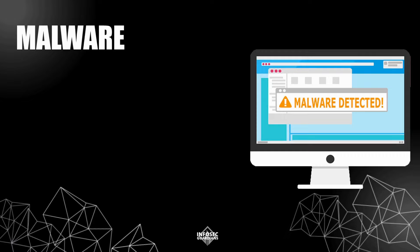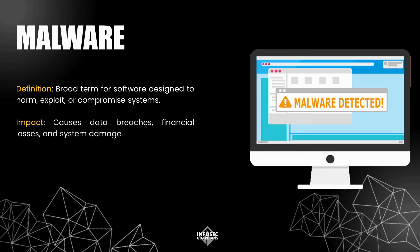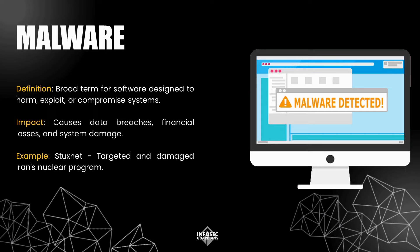At this point, you might be wondering how all these types of malware fit under the broader term malware. Malware is essentially an umbrella term for any software designed with malicious intent, including everything we've talked about so far. The impact of malware can be wide-ranging, from data breaches and financial losses to severe system damage. For instance, the Stuxnet malware is an example of highly sophisticated malware designed to target and damage Iran's nuclear program — highlighting how malware can be used not just by criminals, but also in state-sponsored attacks.